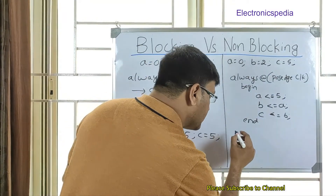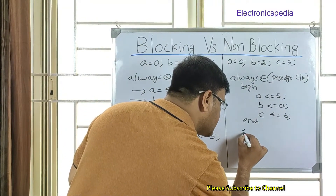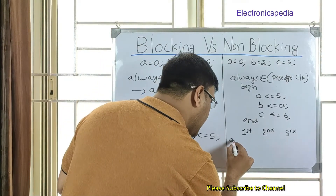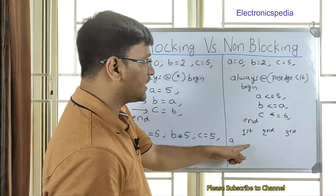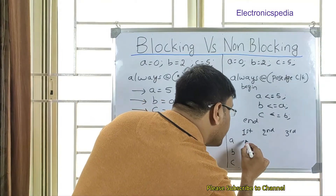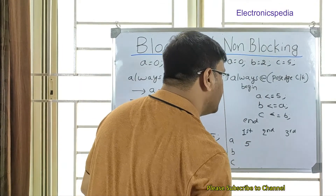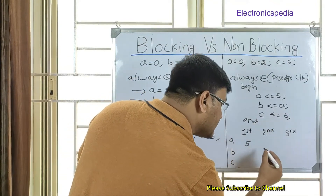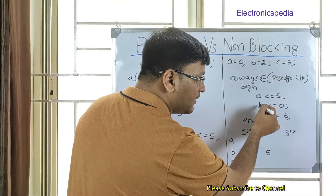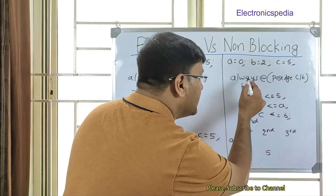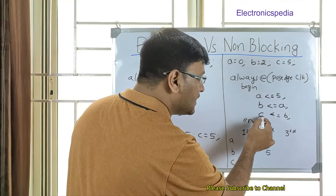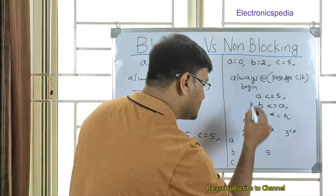In the non-blocking statement, assume these are the initial values: A=0, B=2, C=5. Since all statements execute in parallel, they use the previous values of each signal. In the first clock cycle: A gets 5. B gets the previous value of A which is 0. C gets the previous value of B which is 2. So after the first clock cycle, A=5, B=0, C=2.